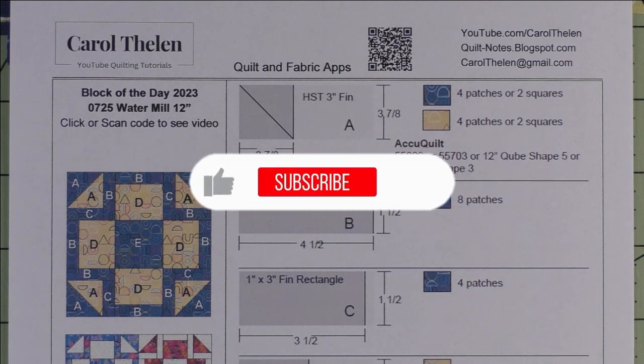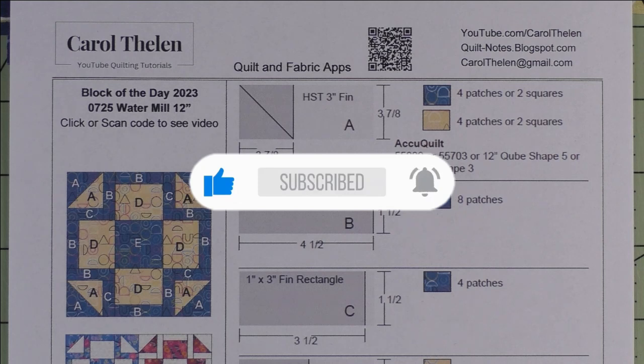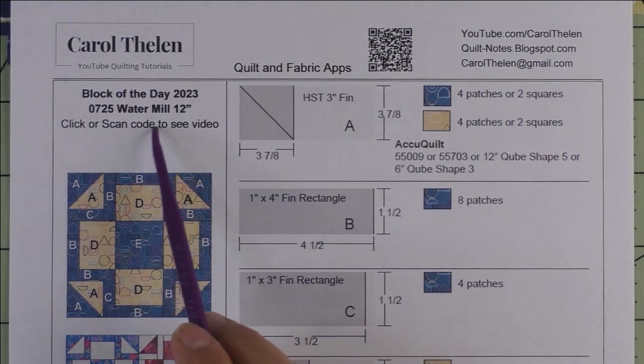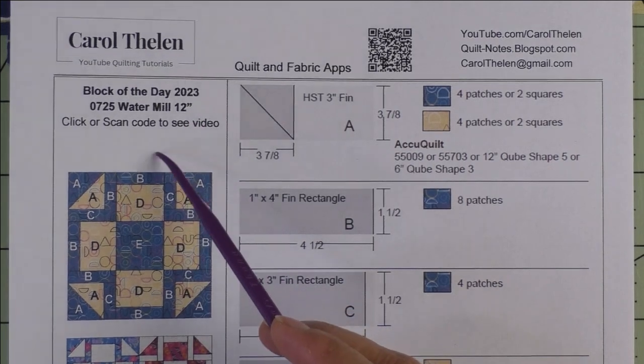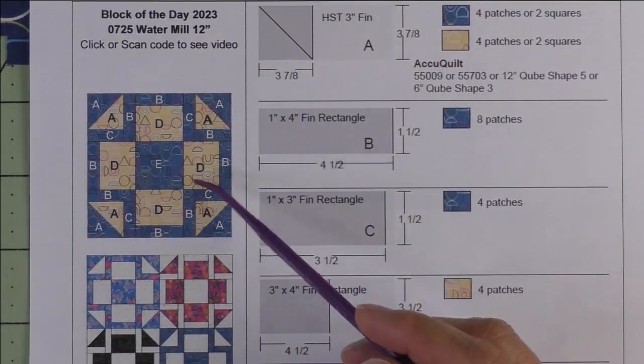Don't forget to subscribe to my channel and click the bell to be notified of future videos. This block is called Water Mill and it is 12 inch finished. Here is the diagram, it's a very simple block piece to cut.